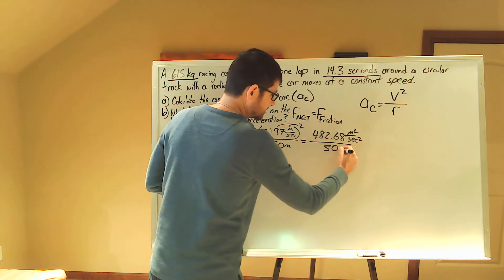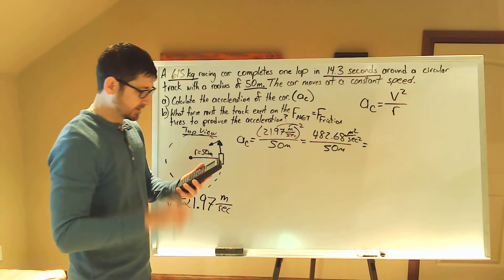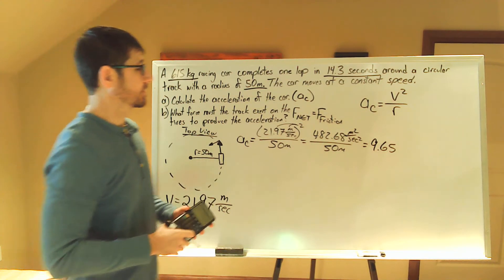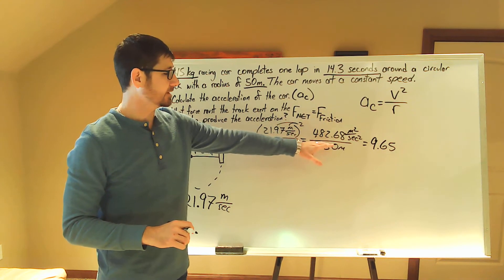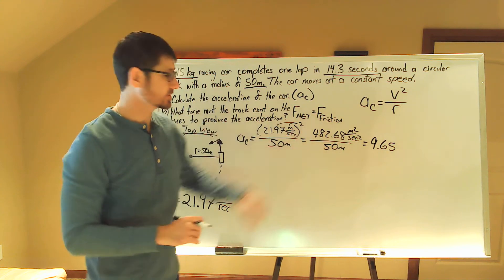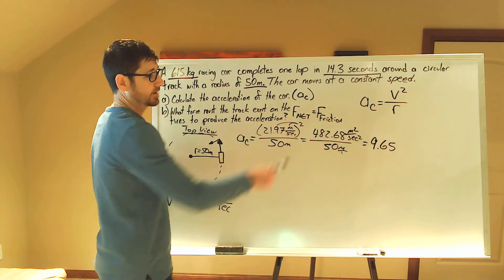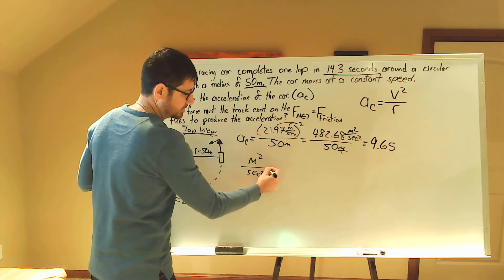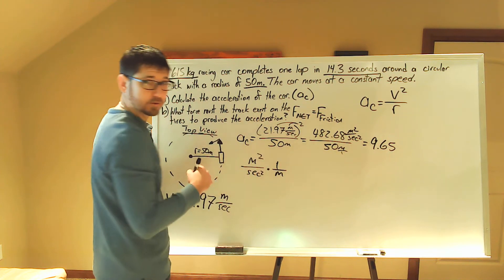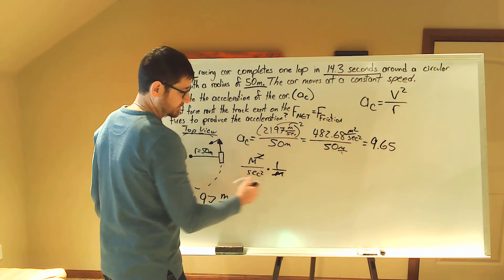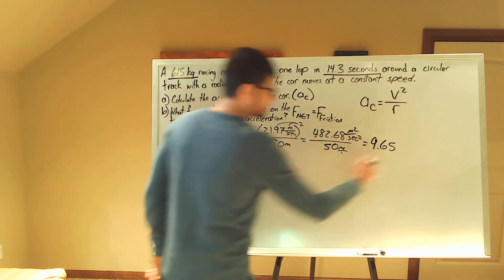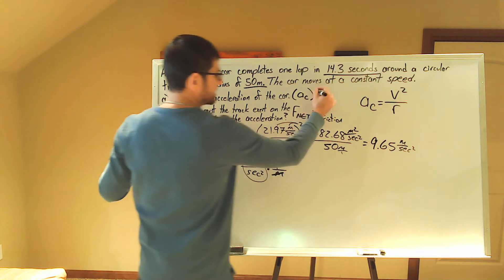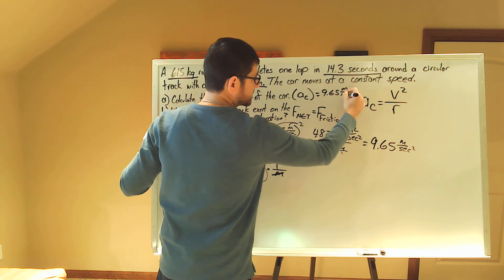We're dividing by 50 meters, which gives me 9.65. In the numerator we have meters squared per second squared, in the denominator we have meters. Algebraically, dividing fractions is like multiplying by the inverse of the denominator: meters squared per second squared times 1 over meters — one of the meters cancels — leaving us with meters per second squared. So the centripetal acceleration is 9.65 meters per second squared.